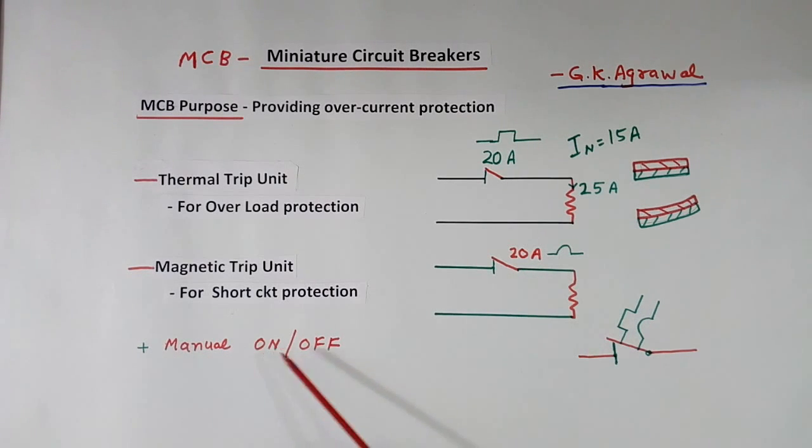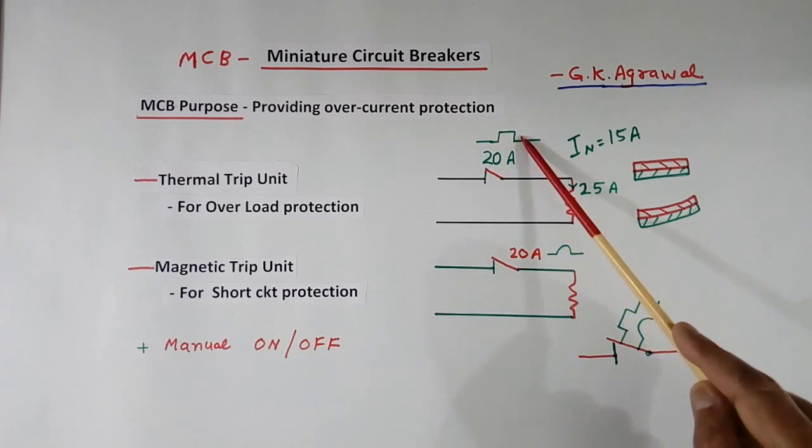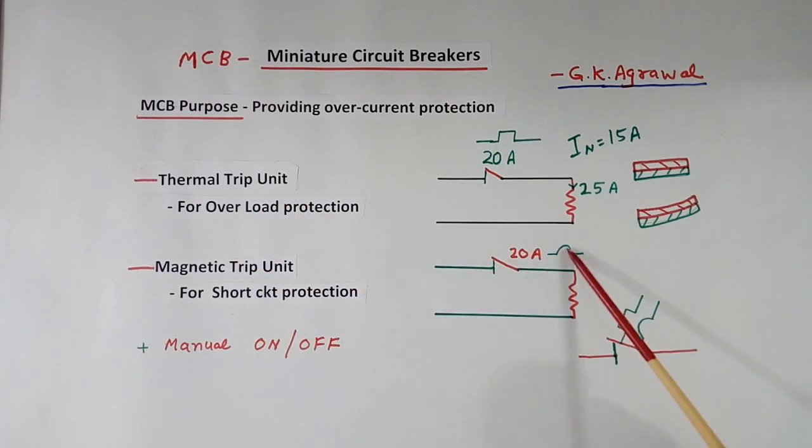And third is manual on and off. Using that you can make it on or off. This symbol I have shown here is for thermal trip unit. This symbol is for magnetic trip unit. If both are there, then both symbols will be shown.